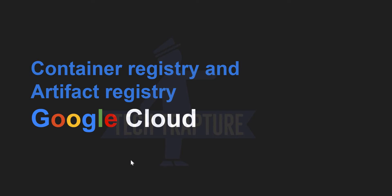In Google Cloud, if you are working with a containerized application you will always need a Docker image to build it. In Docker there is a separate registry hub where we can store Docker images, but if you want to store Docker images at a Google Cloud level, then we need a Container Registry or Artifact Registry — basically a registry or repository where you can store your container images.